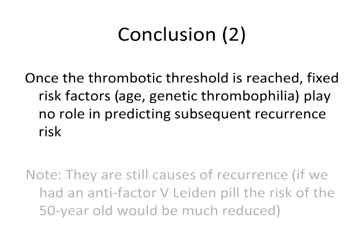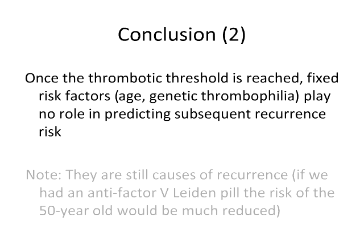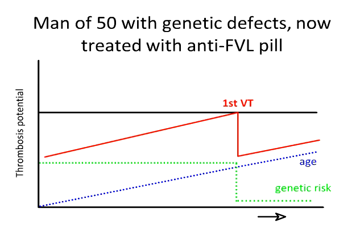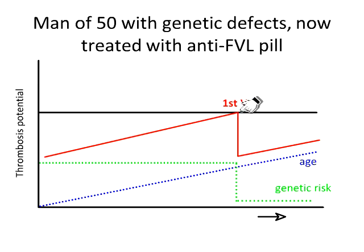My second conclusion is that once the thrombotic threshold is reached, fixed risk factors do not play a role in predicting subsequent recurrence risk. However, it's important to realize that although these factors do not predict, they are still causes of recurrence. Obviously, if we had an anti-Factor V Leiden pill, the patient would go down in thrombotic potential and his risk would be reduced. So these factors are causes, but they do not predict recurrence.